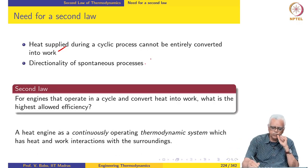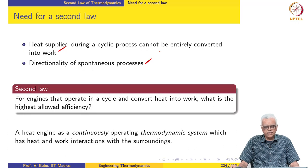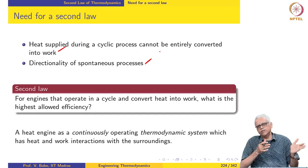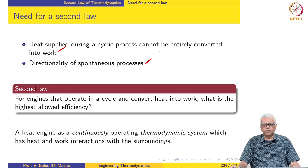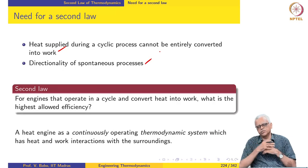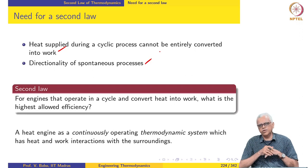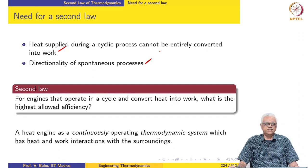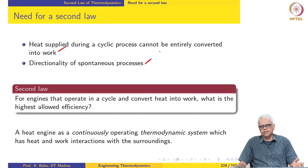The second important question that the second law addresses is the directionality of spontaneous processes. There are many processes in nature which are spontaneous. For example, heat always flows from higher temperature to lower temperature, and air at high pressure stored in a vessel preferentially escapes from the vessel into the ambient. The reverse processes do not take place spontaneously — we have to do something to make them happen — although from an energy perspective, probably both are equally possible.